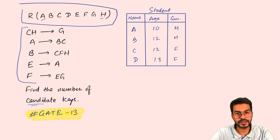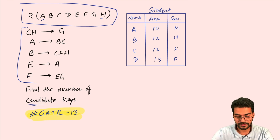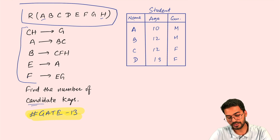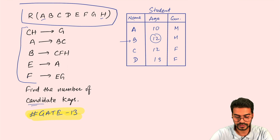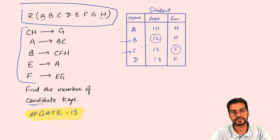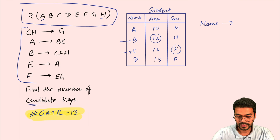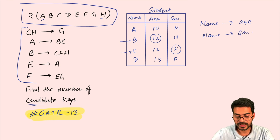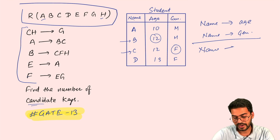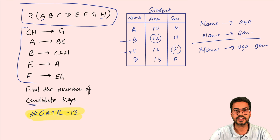Let me start with an example. Assume a table called 'student' with attributes name, age, and gender. If I ask you the age of student B, you can quickly refer to B and say the age is 12. Similarly, you can find the gender of student C. This is because name is unique here — name can identify age, and name can derive gender. We can collectively write it as: name can derive age and gender. This is called a functional dependency.